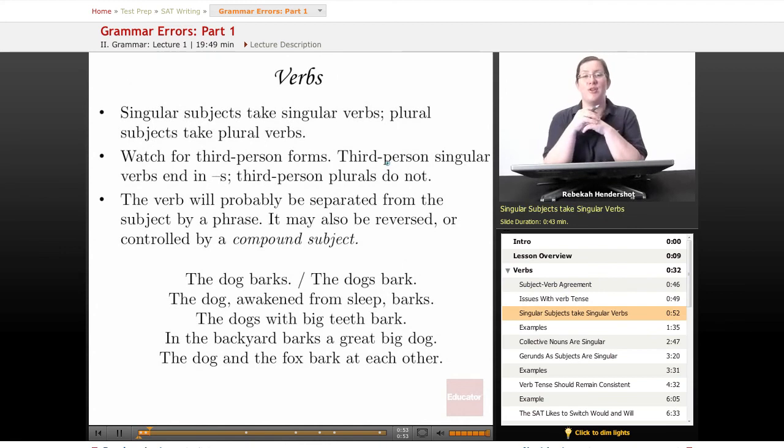Things you need to know about verbs and subject-verb agreement: singular subjects take singular verbs, plural subjects take plural verbs. Watch for third person verb forms. This is where the test will usually try to get you. Third person singular verbs end in S, usually with some exceptions for irregular verbs, and third person plurals generally do not. Something else to watch out for: the verb will probably be separated from the subject by a phrase just to make things harder for you. It may also be reversed, have the verb come before the subject for some reason, or it may be controlled by a compound subject. None of these absolve you of your responsibility to make sure that subjects and verbs agree.